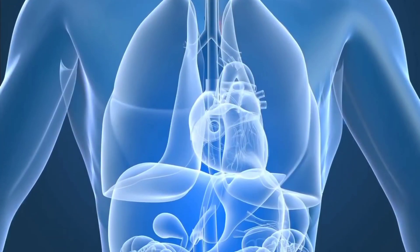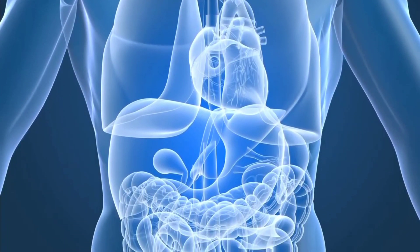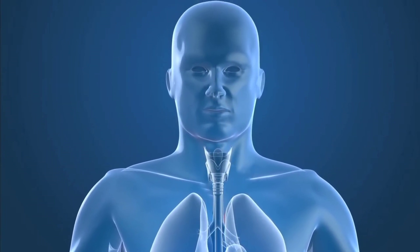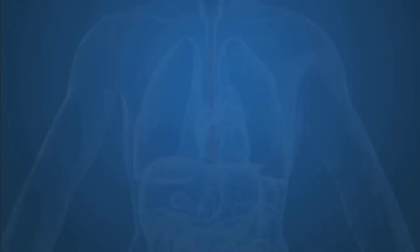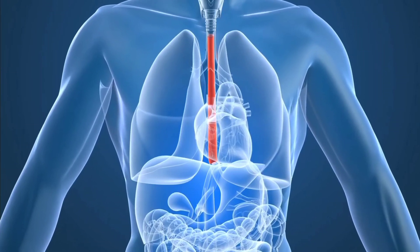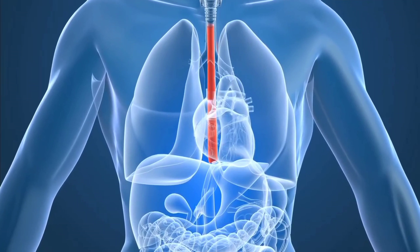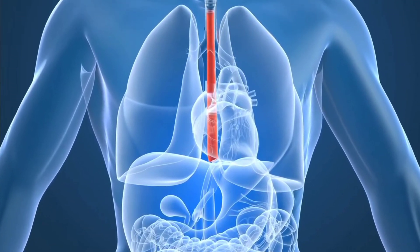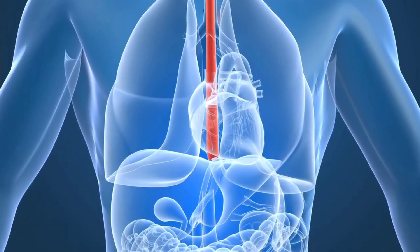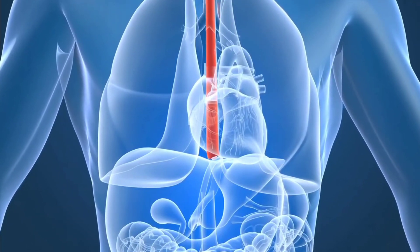Our digestive system is made up of a series of organs that allow our body to get the nutrients and energy it needs from the food we eat. Digestion starts in the mouth, where chewing and saliva break down food so it is more easily processed. Once you swallow, food enters the esophagus — a muscular tube connecting the throat to the stomach. A valve called the lower esophageal sphincter, or LES, opens to let food pass into the stomach and prevents food from moving back up.